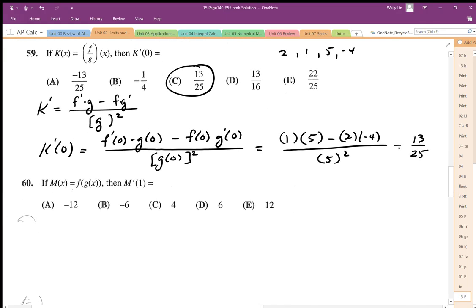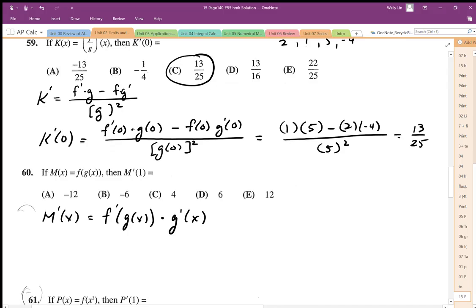This is an embedded function. So when I differentiate m to get m prime, I'm going to differentiate the outside function first and I'm going to multiply it by the derivative of the inside function. In this case here, I've got to use my output of g as my input of f prime.